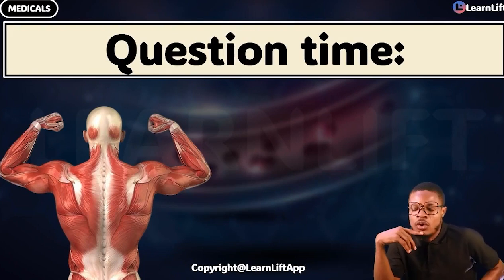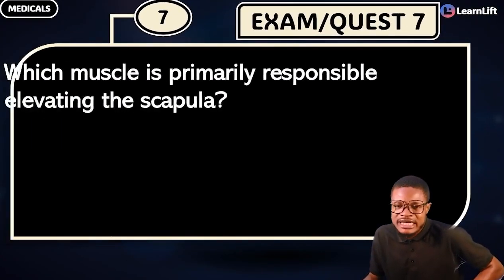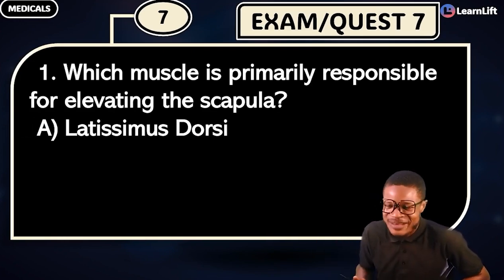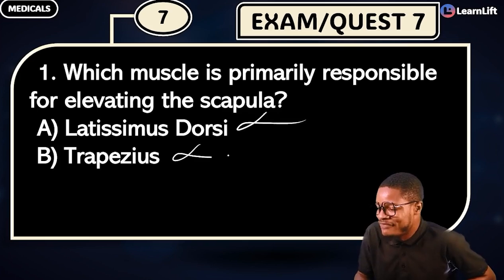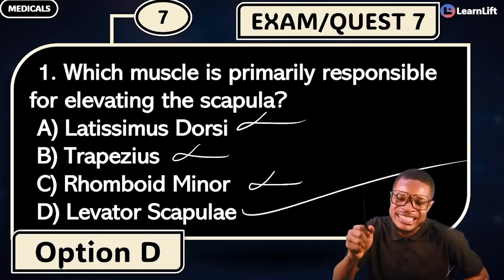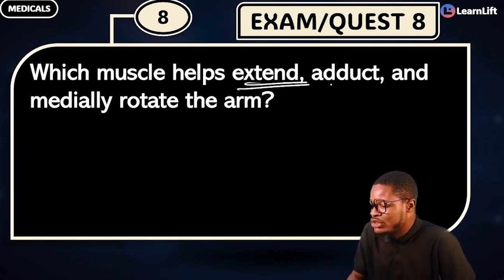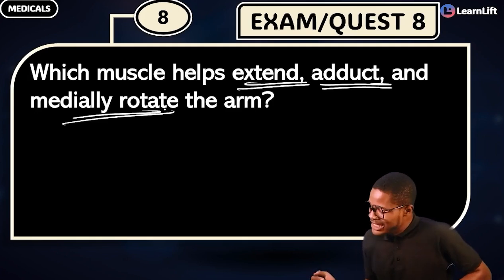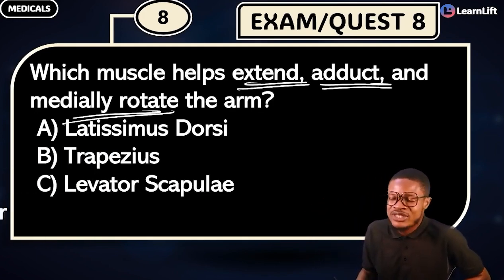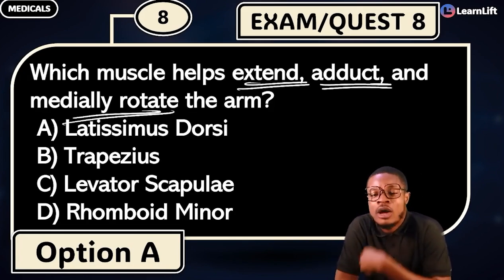Question time! Question: which muscle is primarily responsible for elevating the scapula? Option A: latissimus dorsi — never. Option B: trapezius — never. Option C: rhomboid minor — never. Option D: levator scapulae — correct! Levator scapulae elevates the scapula. Next question: which muscle helps to extend, adduct, and medially rotate the arm? Option A: latissimus dorsi — correct!